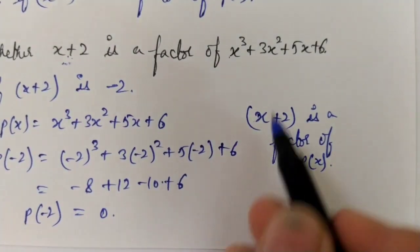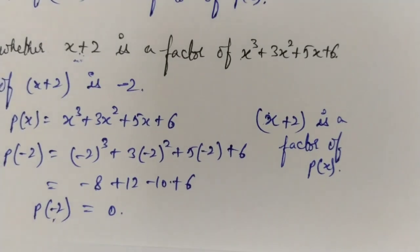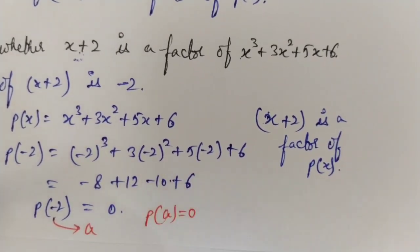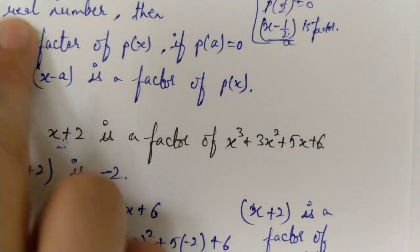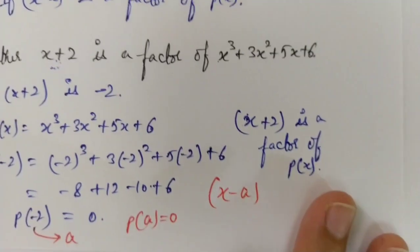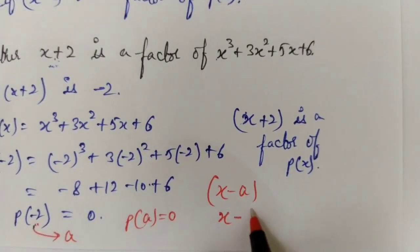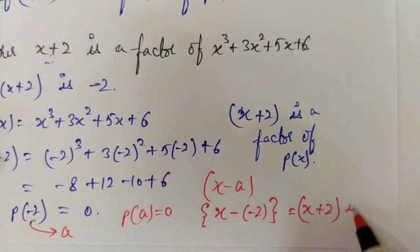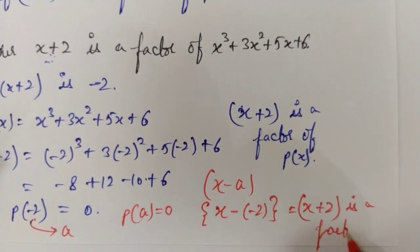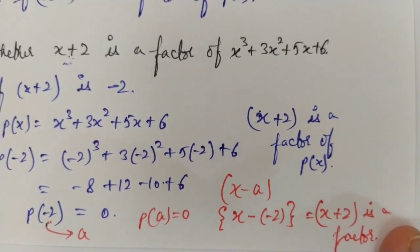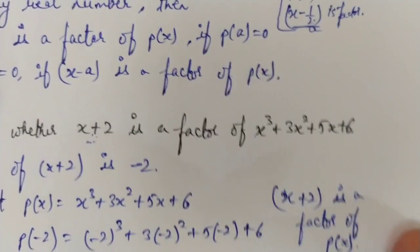Since p(−2) equals zero, therefore x plus 2 is a factor of p(x). To explain in general form: here a is minus 2, and p(a) equals zero, so according to the factor theorem x minus a is a factor of p(x). Here x minus a means x minus (−2), which is x plus 2. So x plus 2 is a factor. You need to be careful about the negative and positive signs, but if you have understood the concept clearly, that will come naturally.